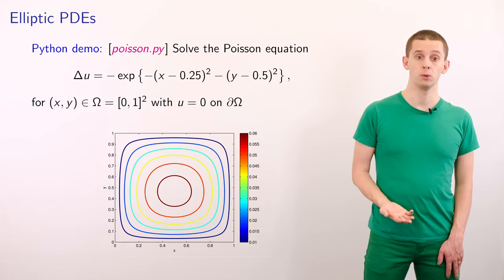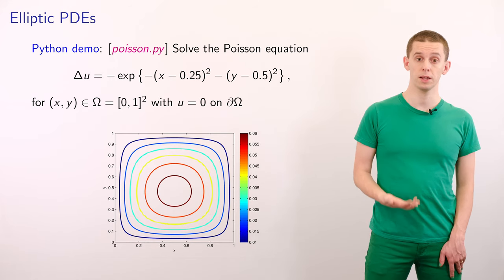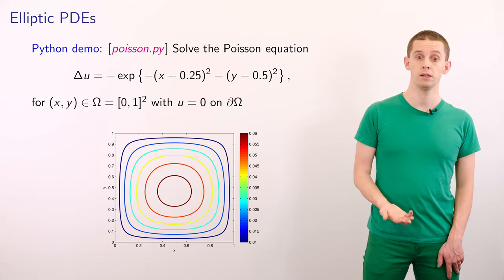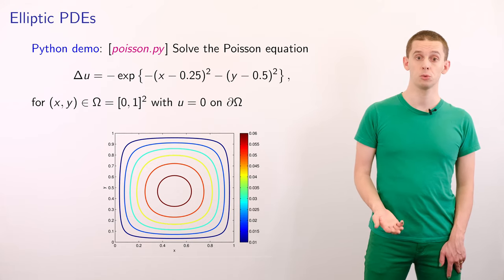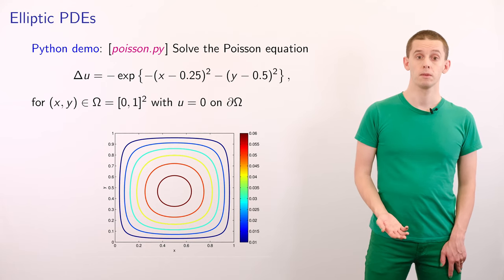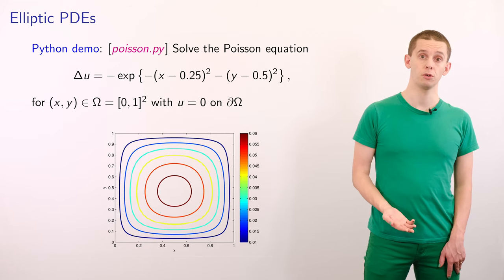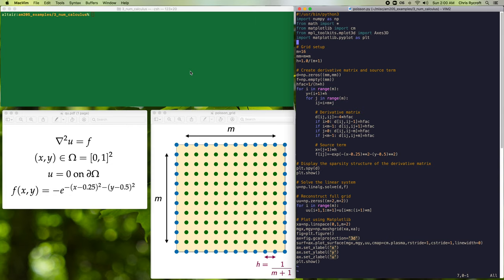So now let's look at a python demo where we'll solve the Poisson equation. Laplacian of u is equal to minus e to the minus x minus 0.25 squared minus y minus 0.5 squared on the unit square. And we'll impose zero Dirichlet boundary conditions on the edges of the square. Let's now take a look at the program Poisson.py that can solve the 2d Poisson equation del squared u equal f on the unit square, and we'll make use of zero Dirichlet boundary conditions on all sides of the square. And for our function f we'll use a negative Gaussian that's centered on x equal a quarter and y equal a half. And we're going to solve this equation using the finite difference method using a regular rectangular grid on our unit square.